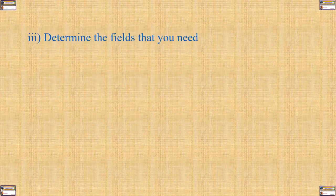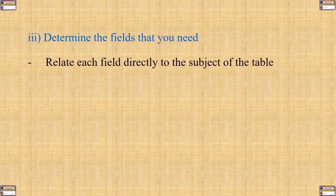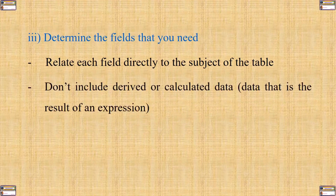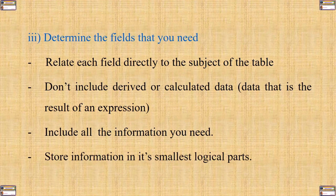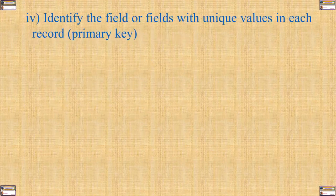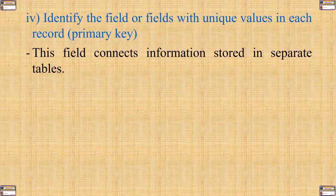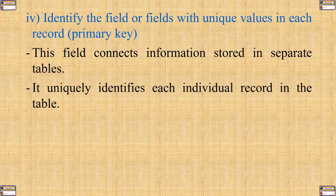Step number three: determine the fields that you need. Relate each field directly to the subject of the table. Number four: don't include derived or calculated data — that is data which is the result of an expression. Include all the information that you need and store information in its smallest logical parts. Identify the field or fields with unique values in each record, which we call the primary key. This field connects information stored in separate tables and uniquely identifies each individual record in the table.